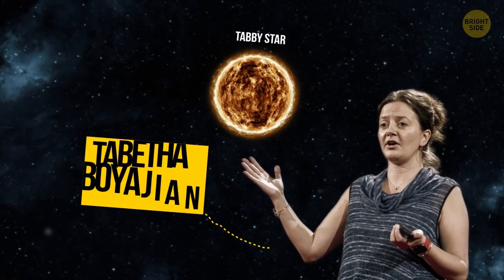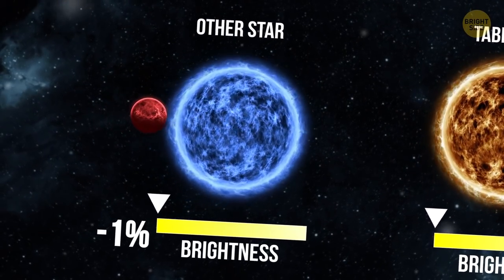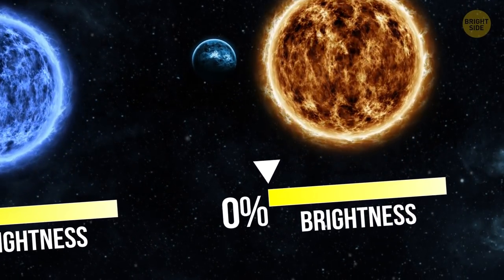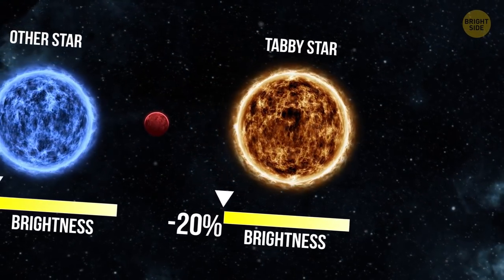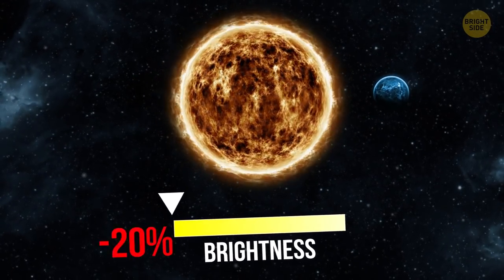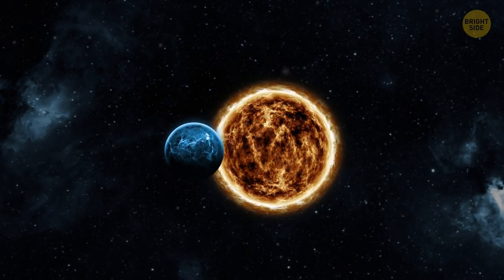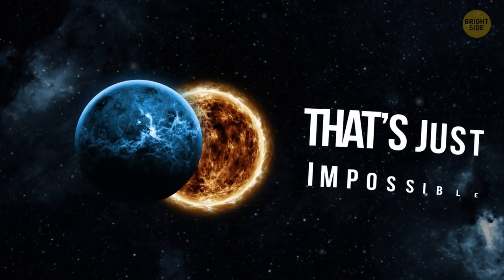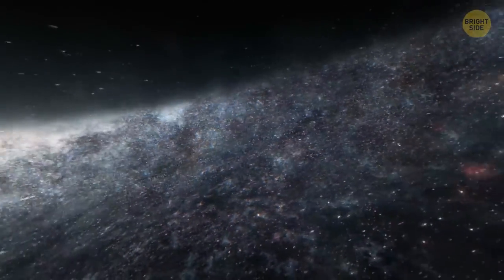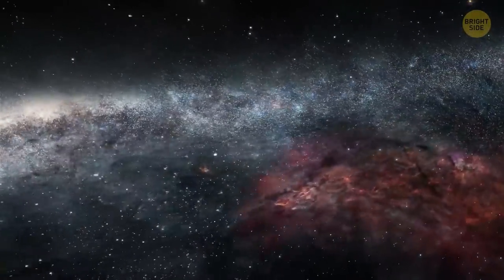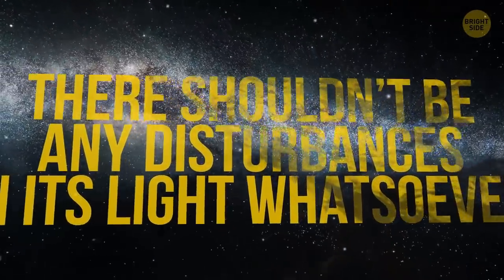Tabby star is named after Professor Tabitha Boyajian, who was the first to notice a strange quality. While other stars dim by about 1% when a planet passes in front of them, Tabby star dimmed much more. The first recorded sightings of it, made in 1890, testify that by the year 1989, this star had lost about 20% of its shine. Of course, this couldn't be caused by a planet passing by. Let's just say it would take a planet bigger than the star itself to do that. But that's just impossible. Stars remain the same brightness for billions of years with almost no change at all. It became even more strange when astronomers figured out that Tabby star is in the middle of its life cycle. There shouldn't be any disturbances in its light whatsoever. But what caused the dimming, then?